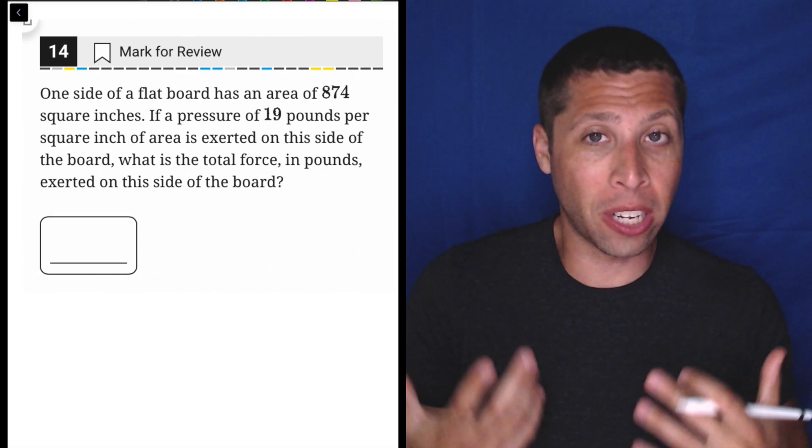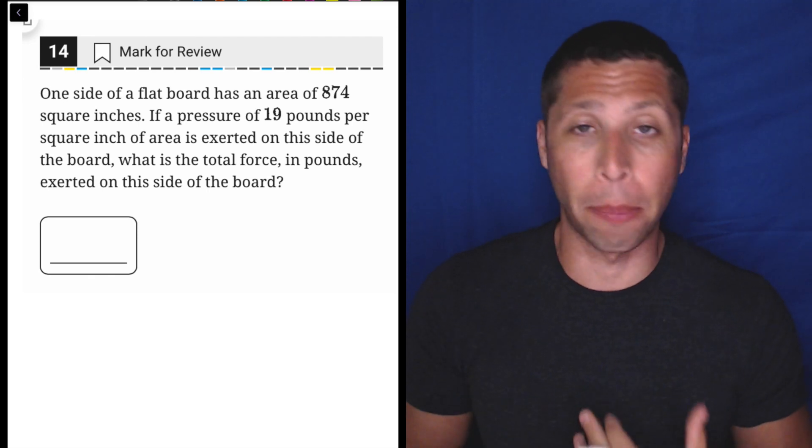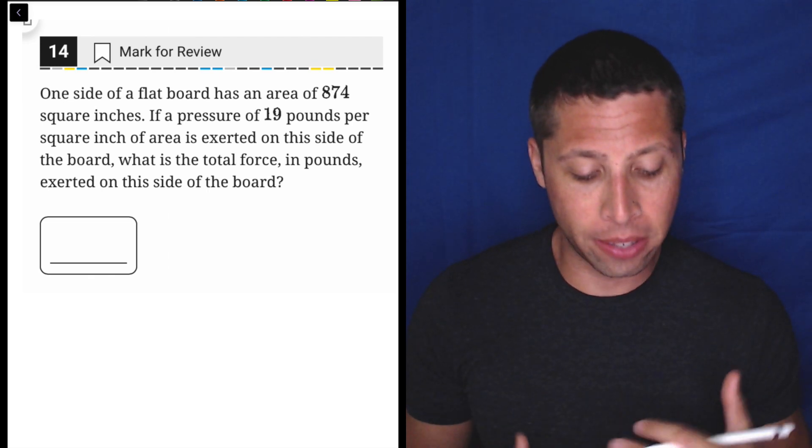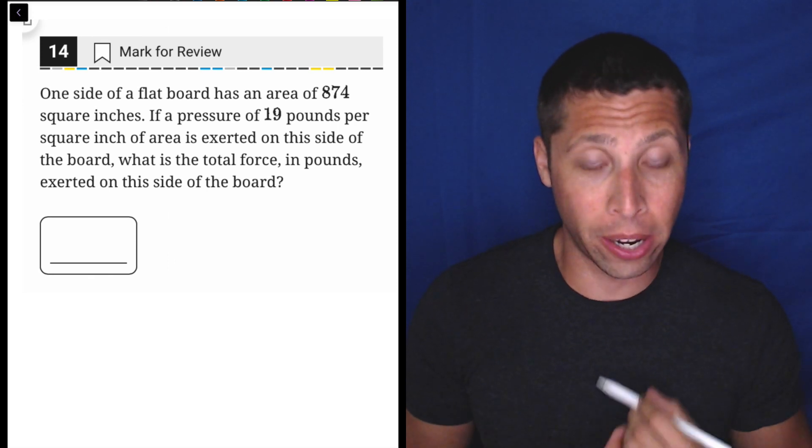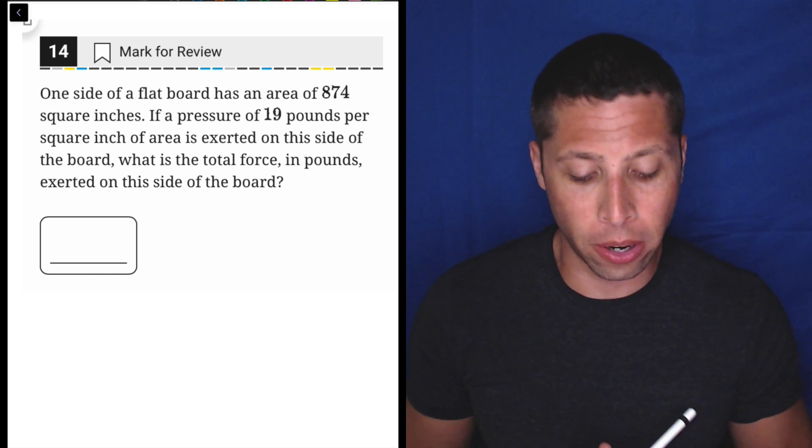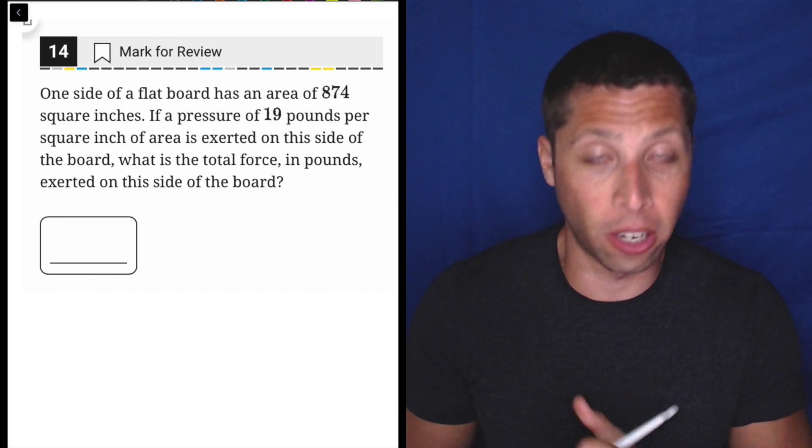This is hard only because most of you are just going to panic and think that this story is more complicated than it is. This is really easy. One side of a flat board has an area of 874 square inches. If a pressure of 19 pounds per square inch of area is exerted on this side of the board, what is the total force in pounds exerted on this side of the board?